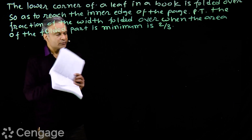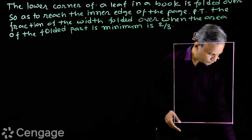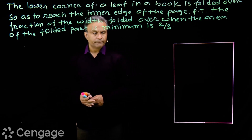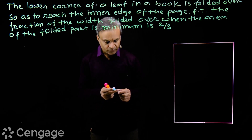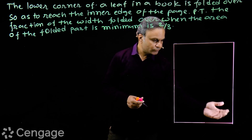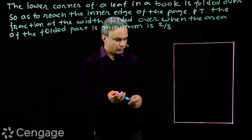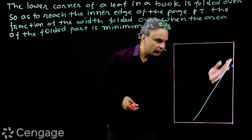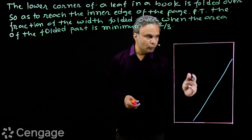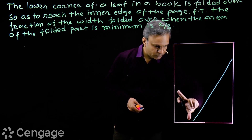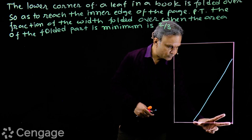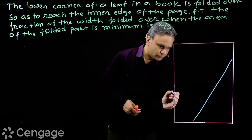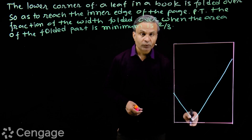Let's draw the figure. Here is the leaf of the book; this is the lower corner and this is the inner edge. Now we are folding this so that this corner reaches the inner edge. Suppose it is folded like this — this is the crease of the fold.